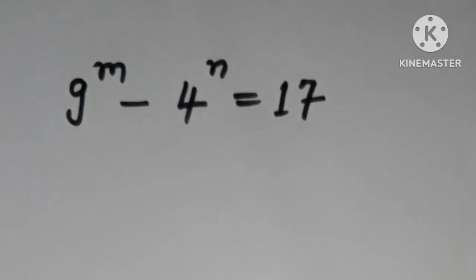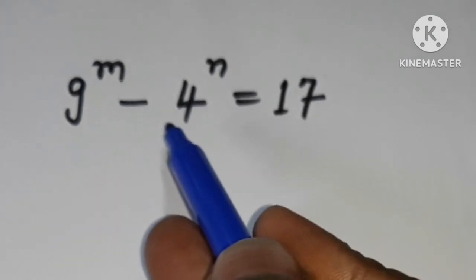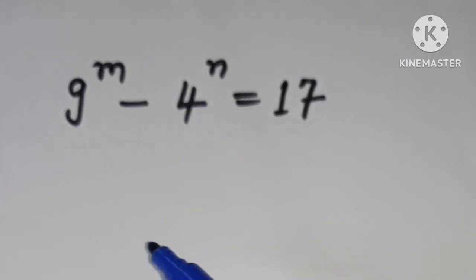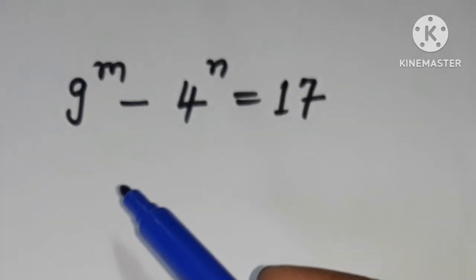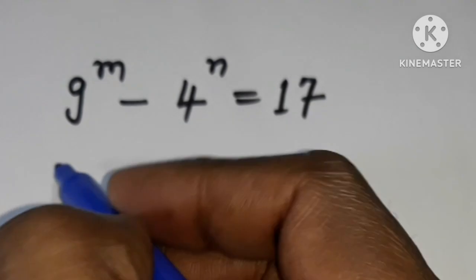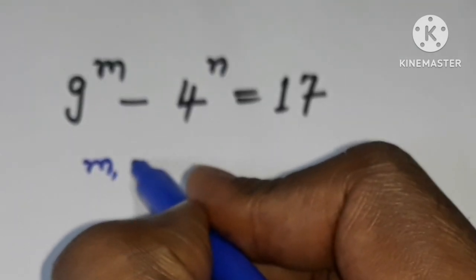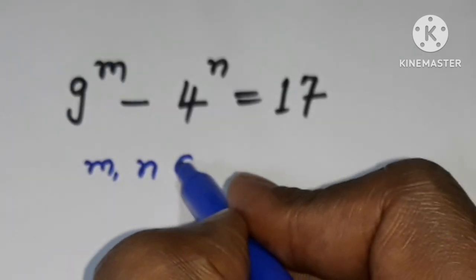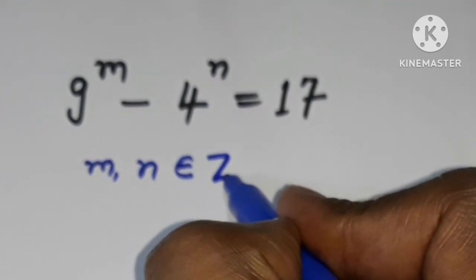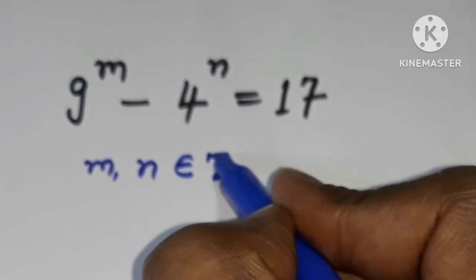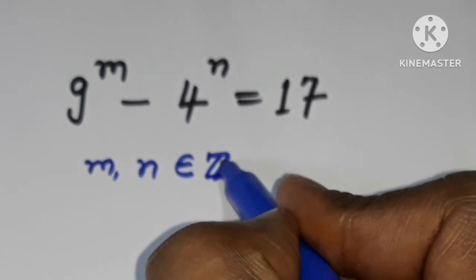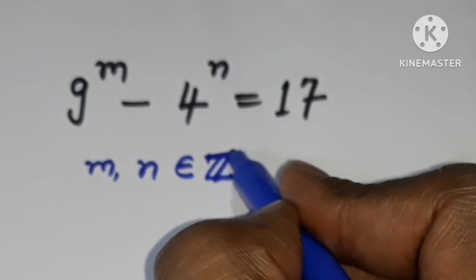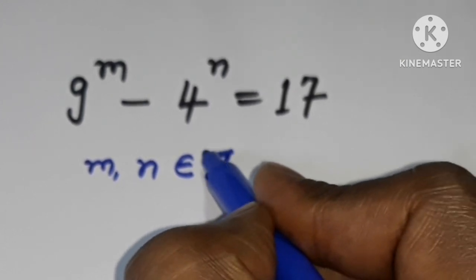Welcome back to Triple X Learning. Today we have this question: 9 to the power m minus 4 to the power n equals 17. How can we proceed with this question? Here m and n are integers — m and n are elements of the integers.